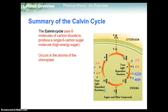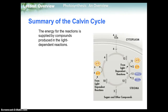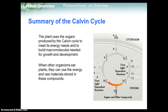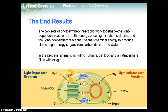The Calvin cycle occurs in the stroma of the chloroplast. The energy for these reactions is supplied by the compounds produced in the light-dependent reactions. The plant uses the sugars produced by the Calvin cycle to meet its energy needs and to build macromolecules needed for growth and development. When other organisms eat plants, they can use the energy and raw materials stored in these compounds. The two sets of photosynthetic reactions work together: the light-dependent reactions trap the energy of sunlight into chemical form, and the light-independent reactions use that chemical energy to produce stable, high-energy sugars from carbon dioxide and water. In the process, animals including humans get food and an atmosphere filled with oxygen.